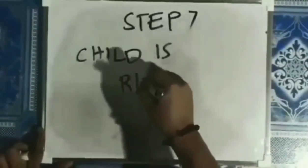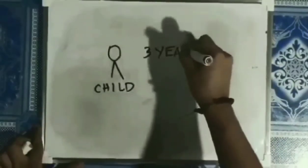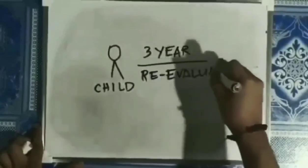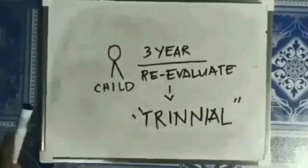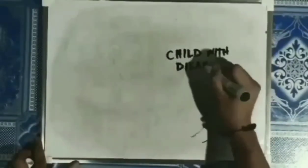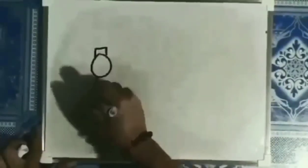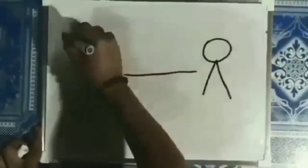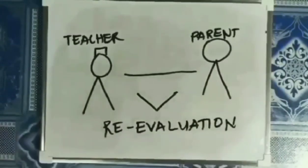Step 7: Child is re-evaluated. At least every 3 years, the child must be re-evaluated. This evaluation is often called a triennial. Its purpose is to find out if the child continues to be a child with a disability as defined by IDEA, and what the child's educational needs are. However, the child must be re-evaluated more often if conditions warrant, or if the child's parent or teacher asks for a new evaluation.